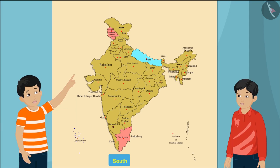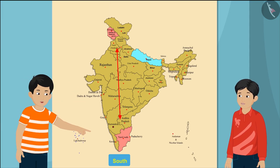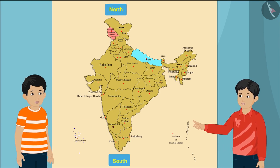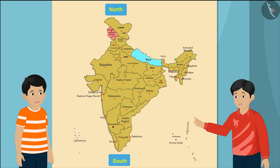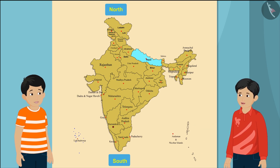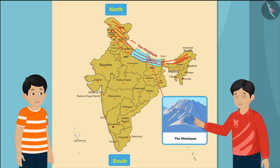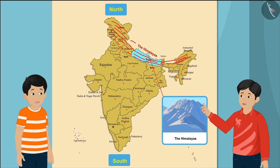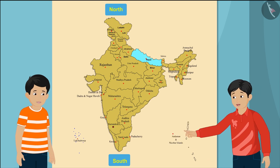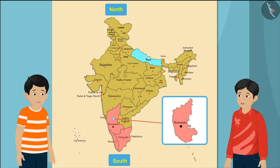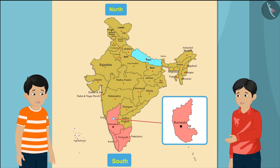Jammu and Kashmir and Tamil Nadu are in opposite directions! Yes, Raju — Jammu and Kashmir is in the northern part of India. Not only this, do you know that the vast Himalayan mountain range is also in the northern part of India? And Tamil Nadu, Kerala, and Karnataka — all these states are in the southern parts of India.